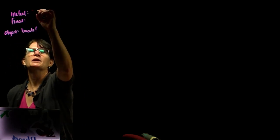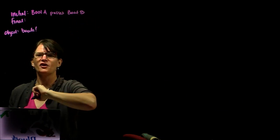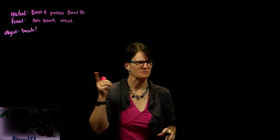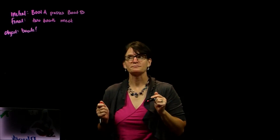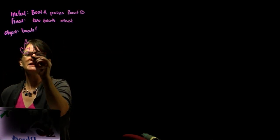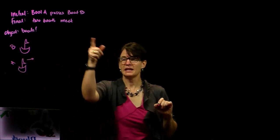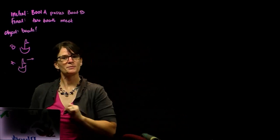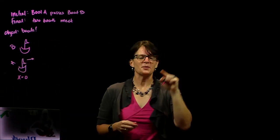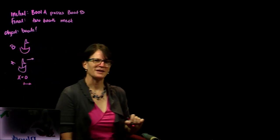I'm going to define the start as when boat A passes boat B, and the end as when the two boats meet. Given that framing, we draw a picture: here is boat B sitting at rest, and here is boat A moving. I identify the origin at the point where boat B is when boat A passes it. The positive direction is to the right by convention.